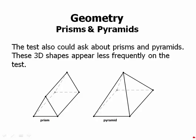Prisms and Pyramids. The test could also ask about prisms and pyramids. These 3D shapes appear less frequently on the test, but they could appear. We have an example of each here.